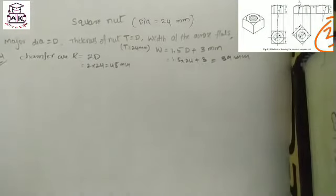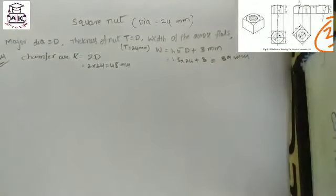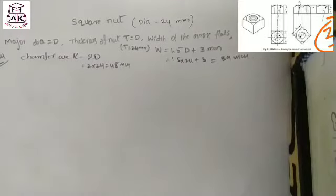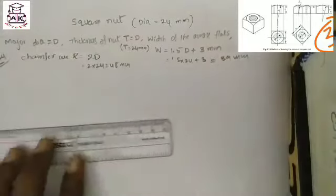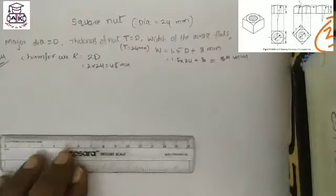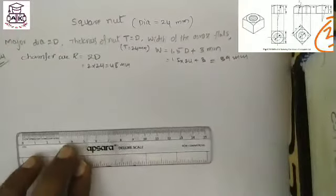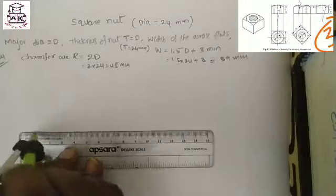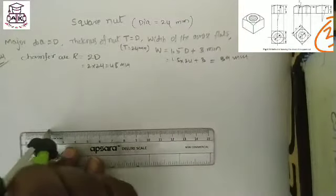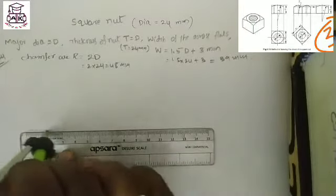For a square nut, the major diameter d equals 24 mm. The thickness of the nut equals d, the width across flats W equals 1.5 times d plus 3 mm, and the chamfer radius equals 2d. Please follow the procedure to draw the square nut.